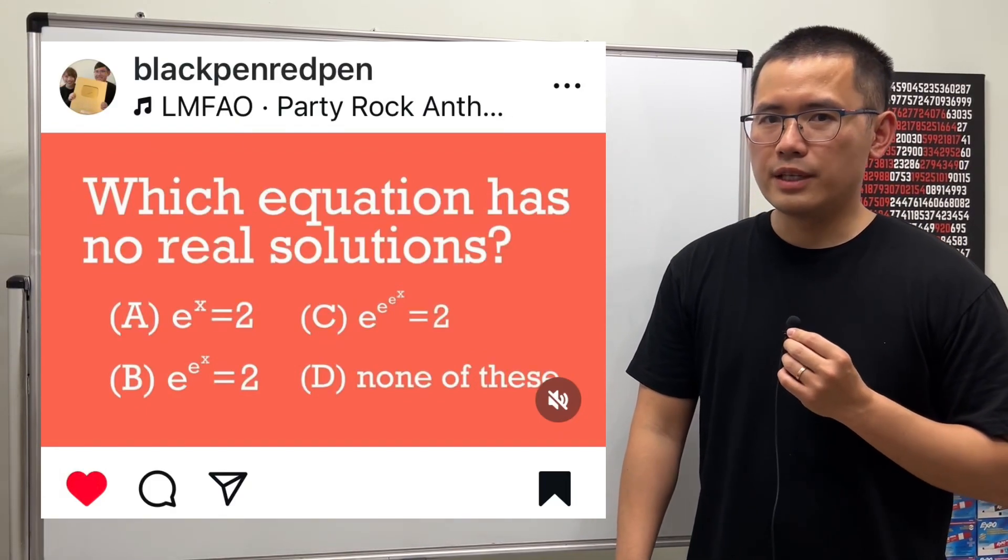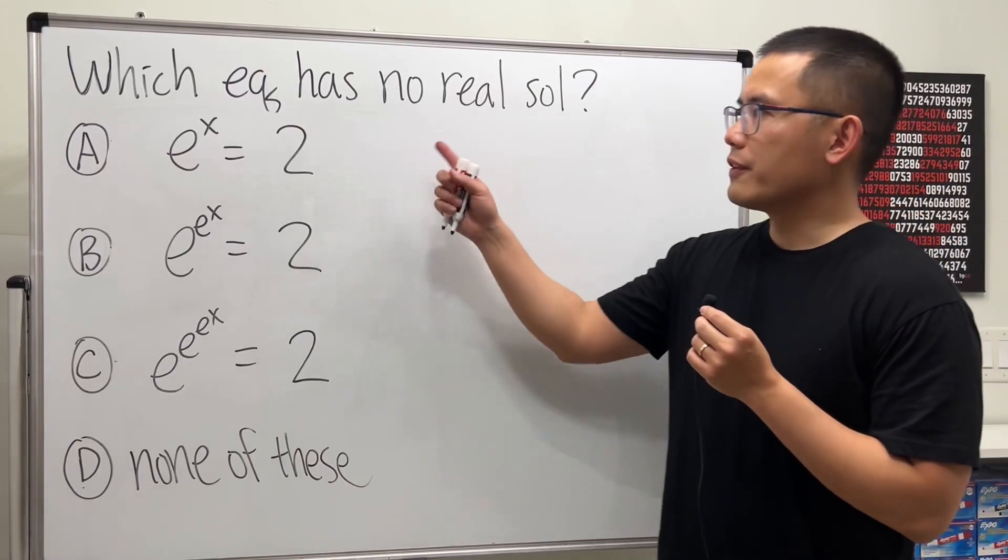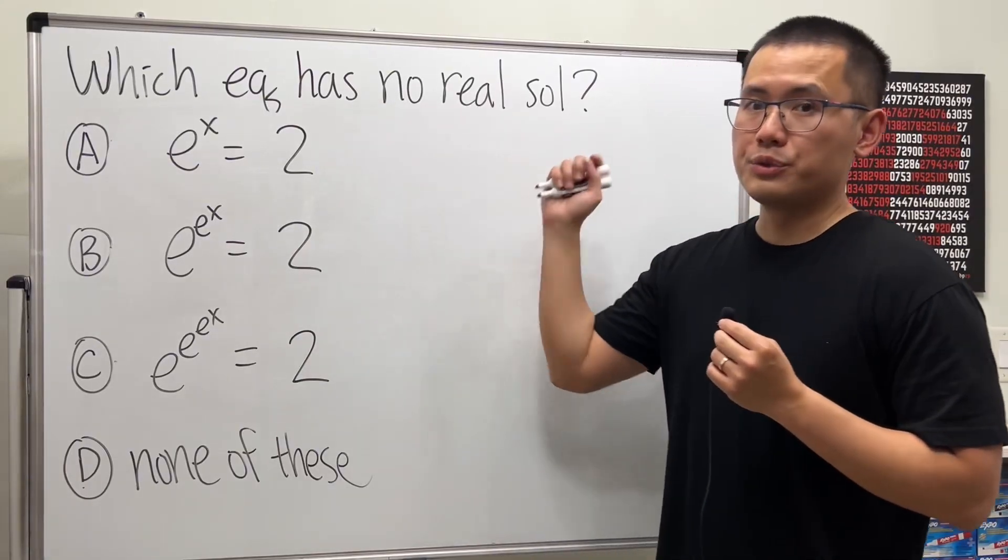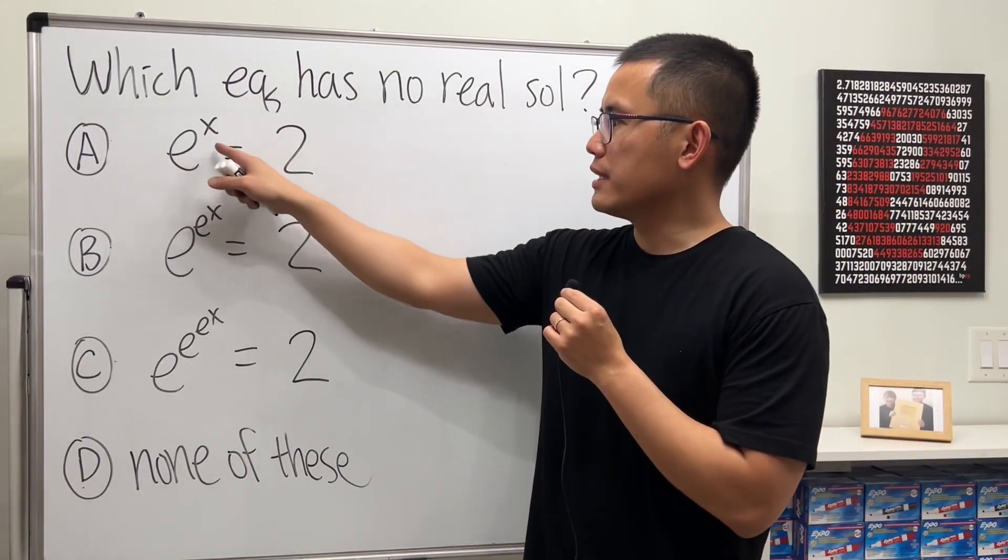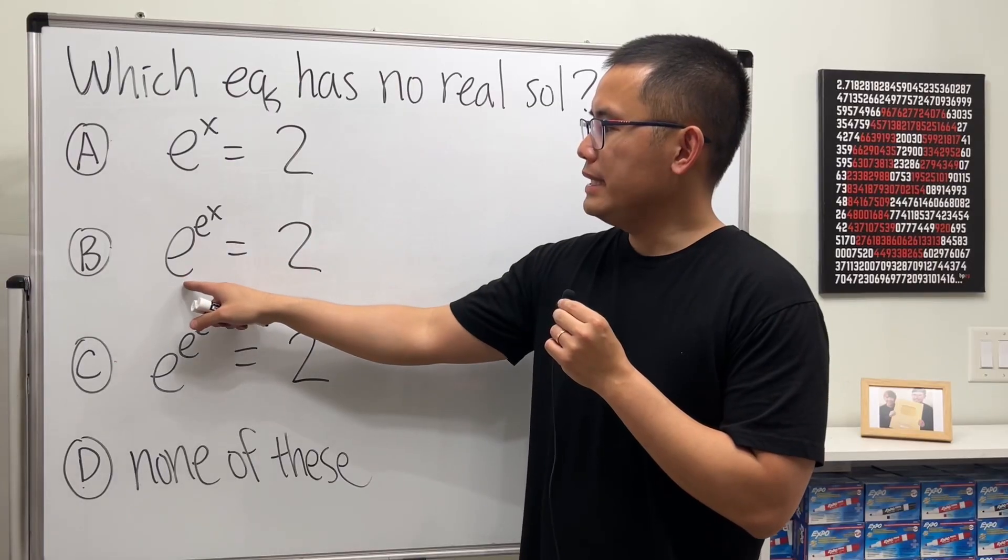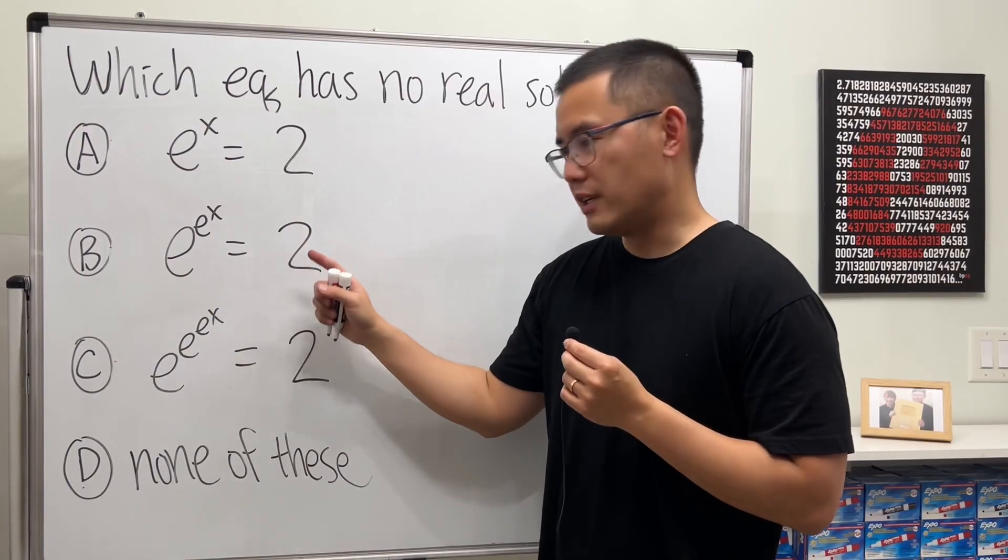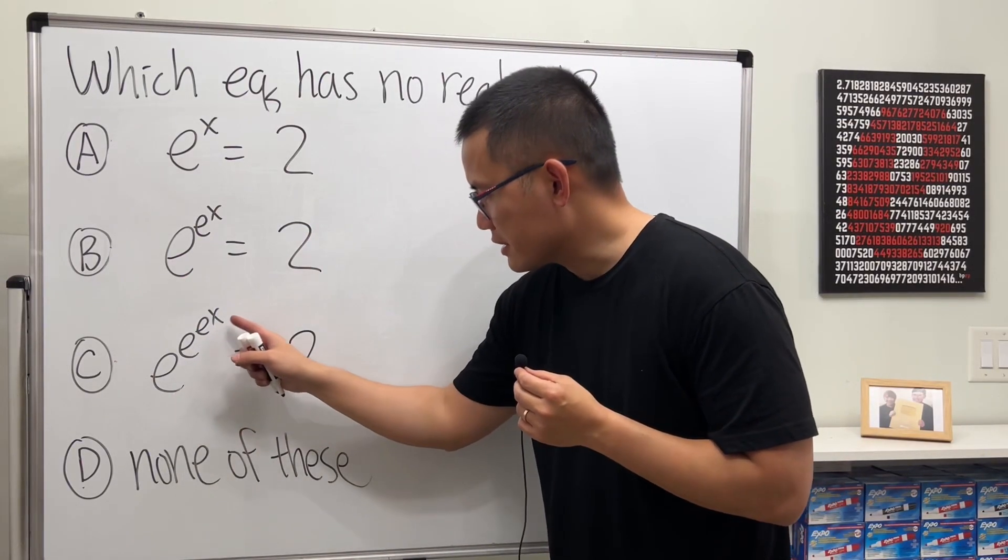I want to talk about this question I posted on my Instagram the other day. Which of the following equations has no real solutions? The first one is e^x = 2. The second one, e^(e^x) = 2. The third one, e^(e^(e^x)) = 2.